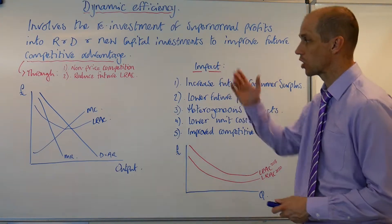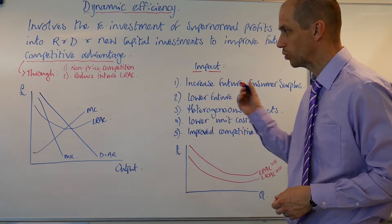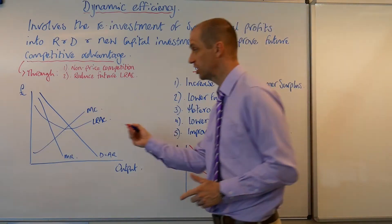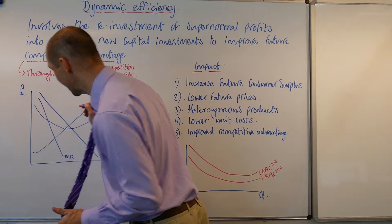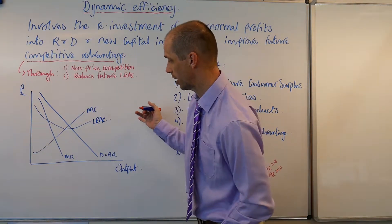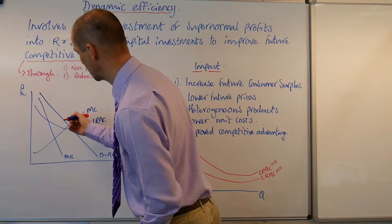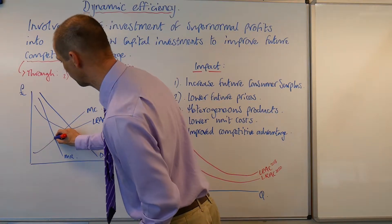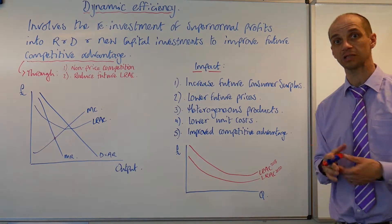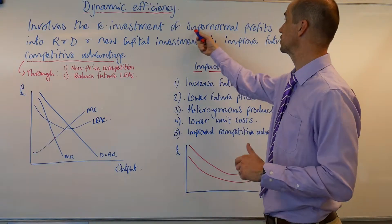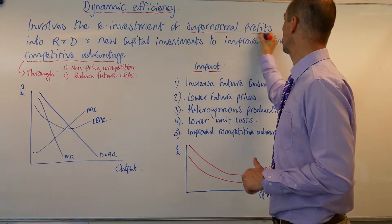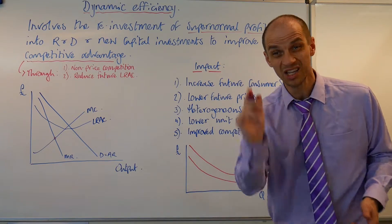Let's now take a look at the key condition that we need to fulfil for this to actually happen. I've just drawn out a monopoly-based diagram here. We can see where MC equals MR. At this point, we know that this is our profit-maximising level of output.